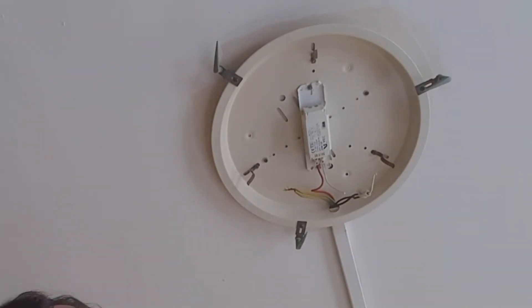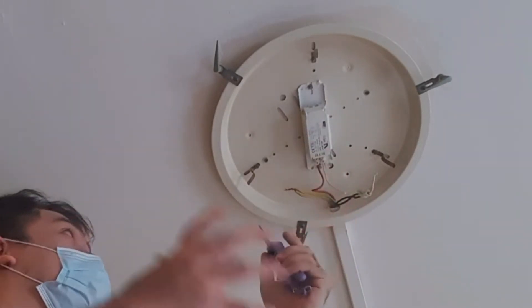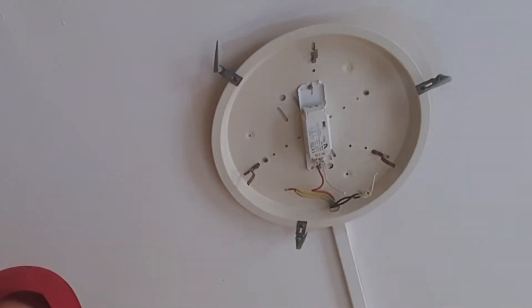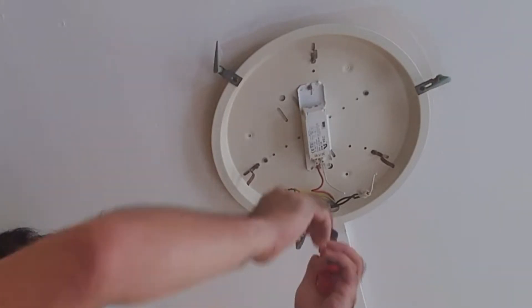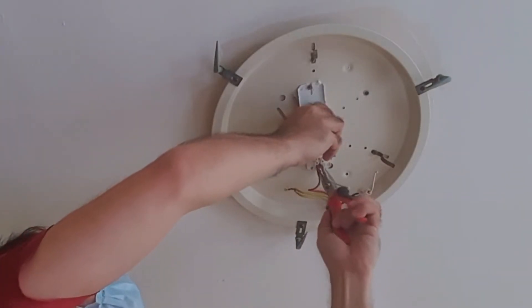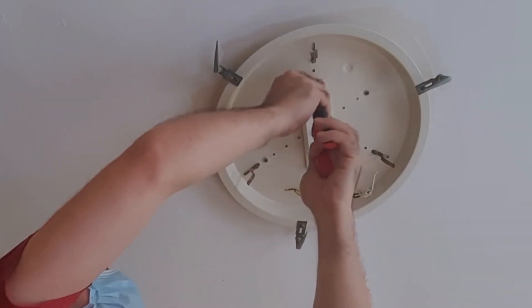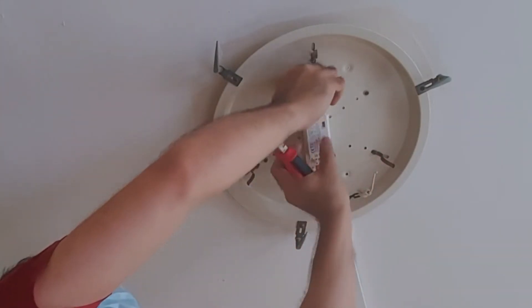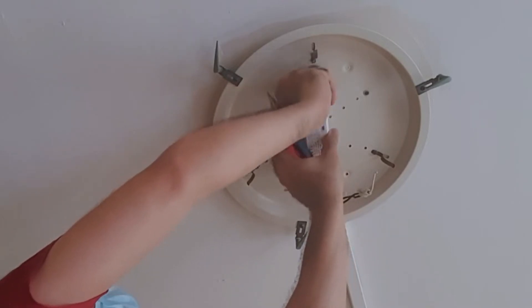Then, you have these nuts that hold the ballast to the ceiling. You get yourself a pair of pliers and you start undoing those nuts. And this should slide right off.